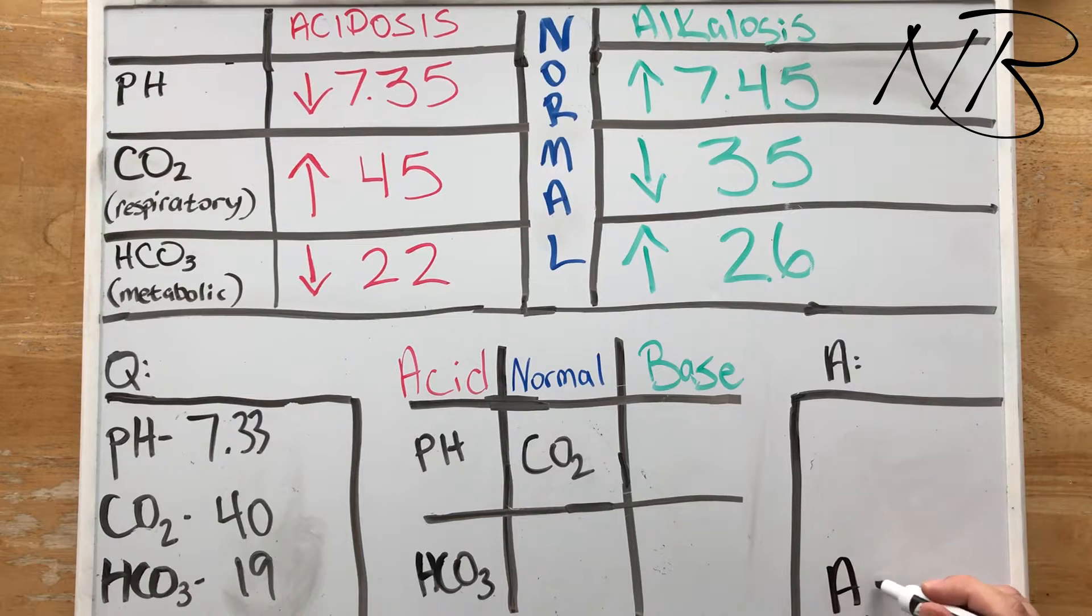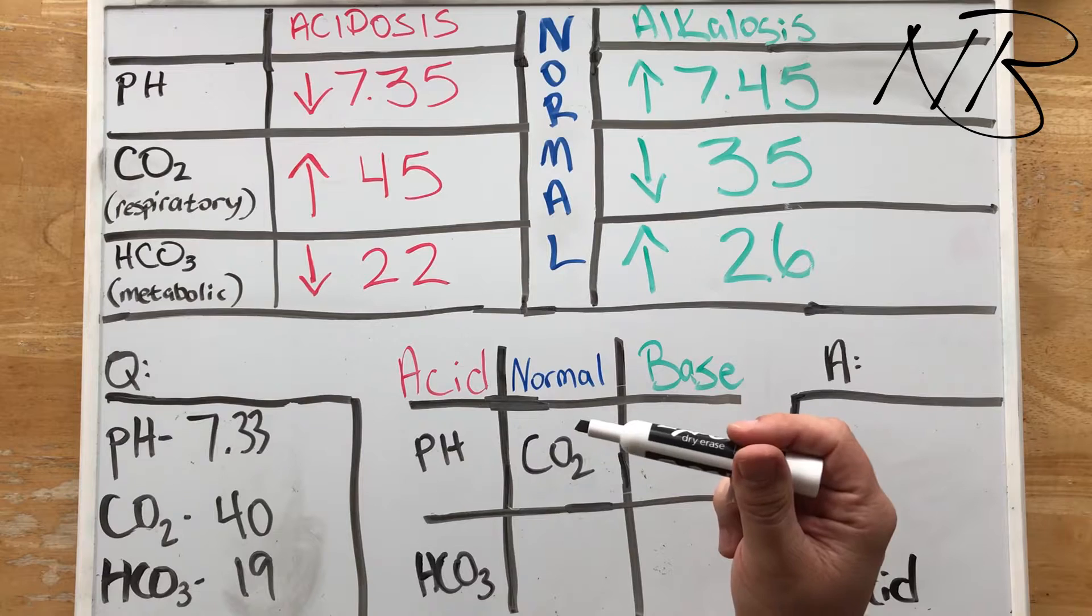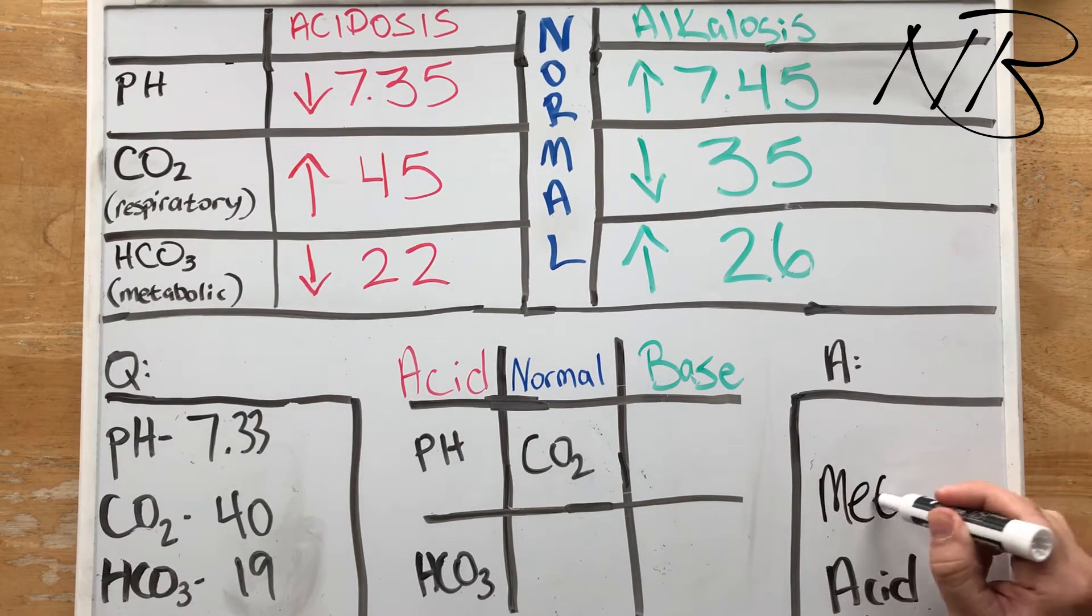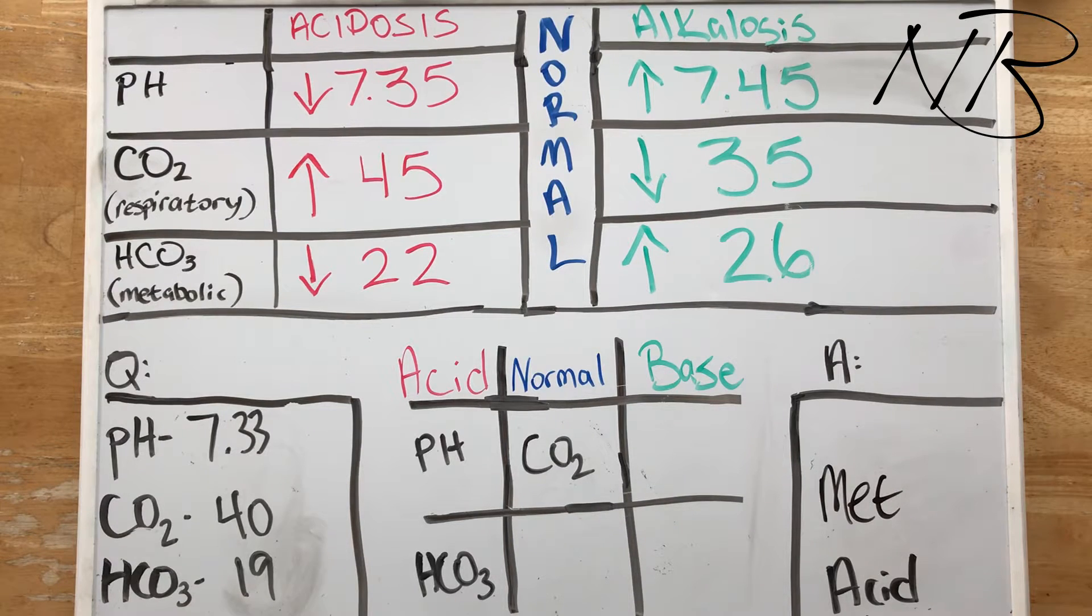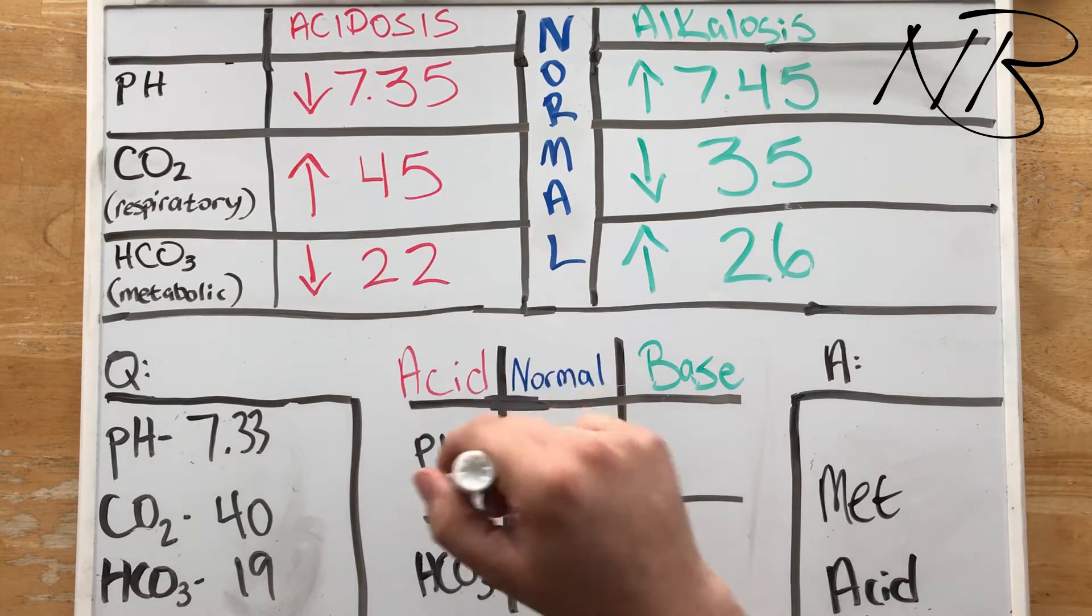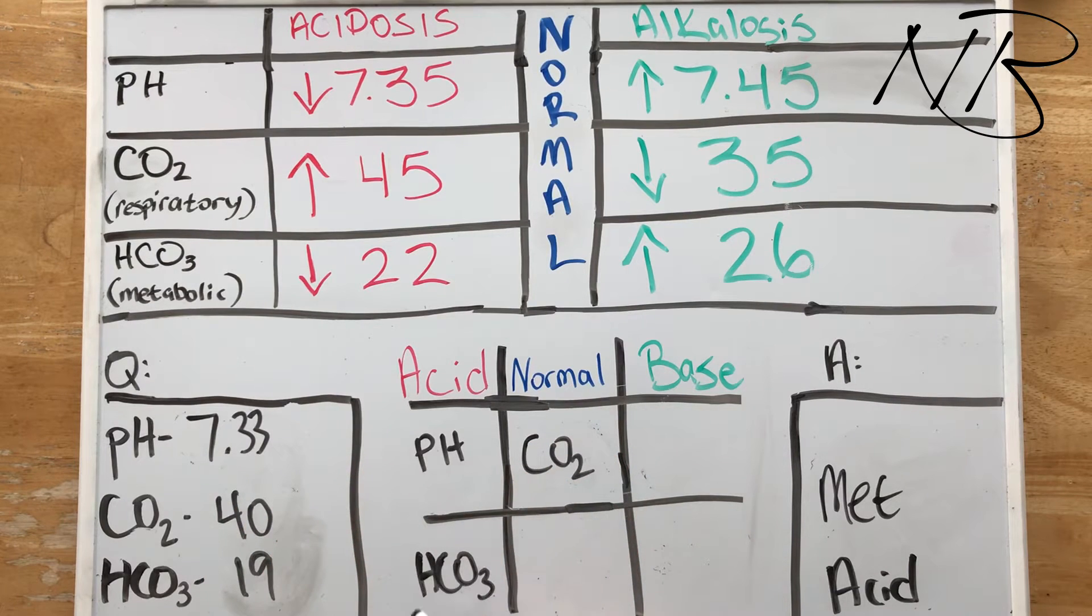And so as we can see our pH is in the acid column, so we already know we're in the state of acidosis. And what is the cause of our acidosis? It's going to be that bicarbonate related to the kidneys. Therefore it is a metabolic acidosis. So again, it's all about finding out what the pH is, whether it's acidotic or alkalotic, and then determining what falls in that same category causing the acidosis or alkalosis.